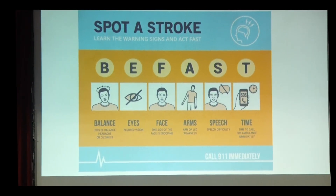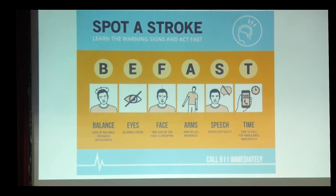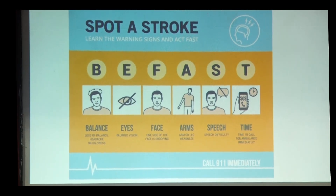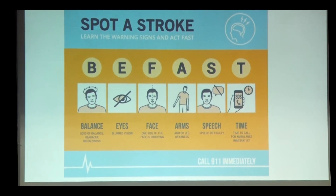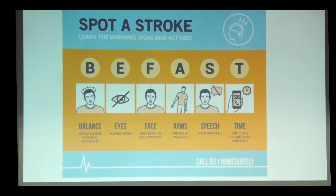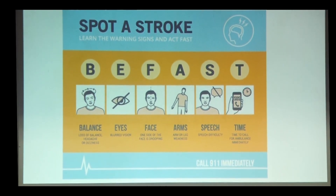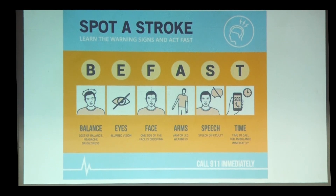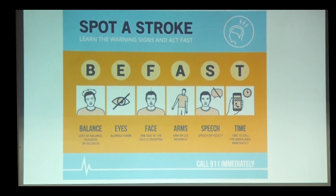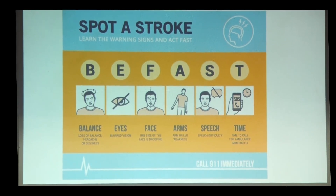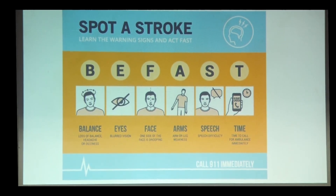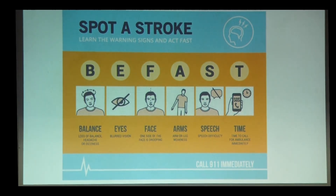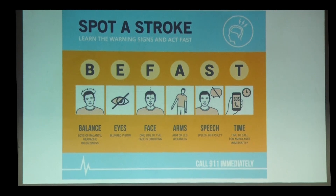Previously we were using the algorithm FAST for early detection of stroke. F stands for any facial deviation, A for arm weakness, S for slurring of speech, and T for time.